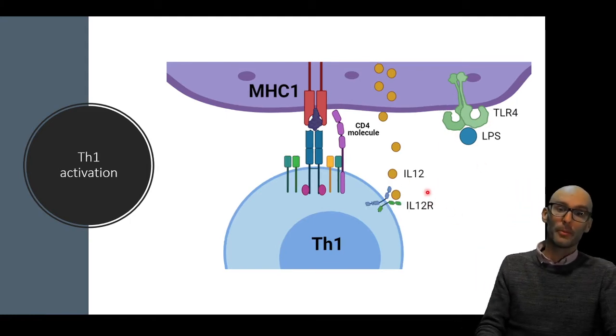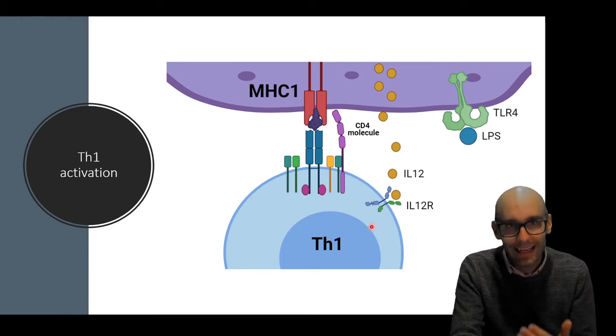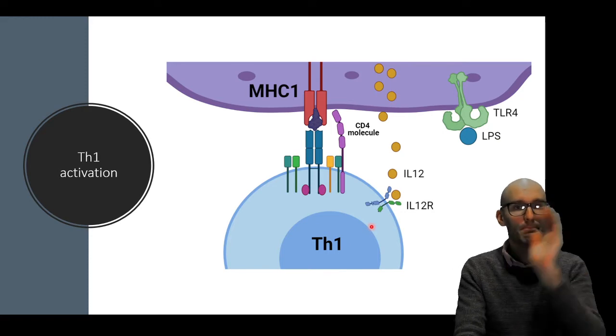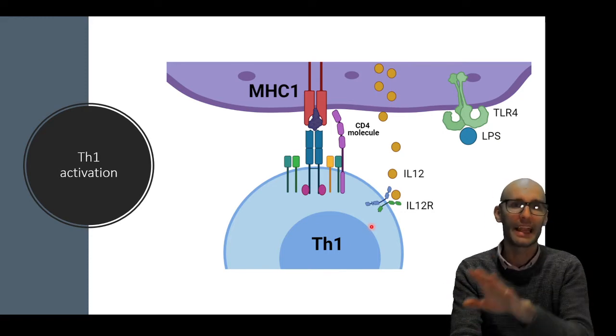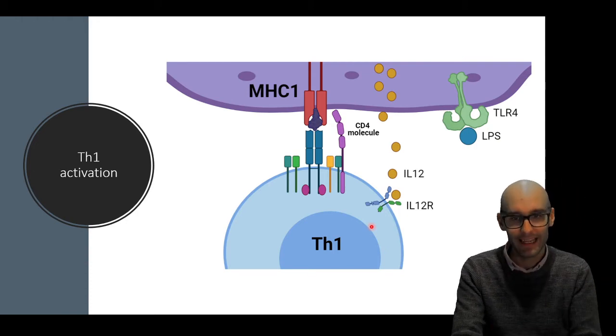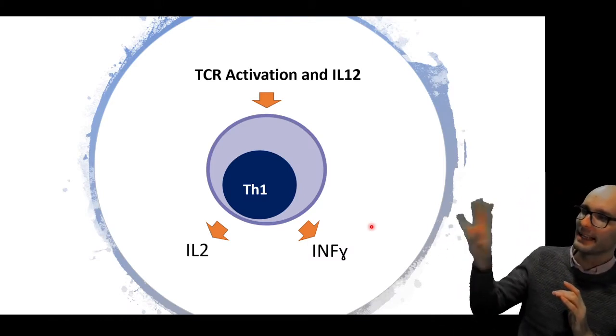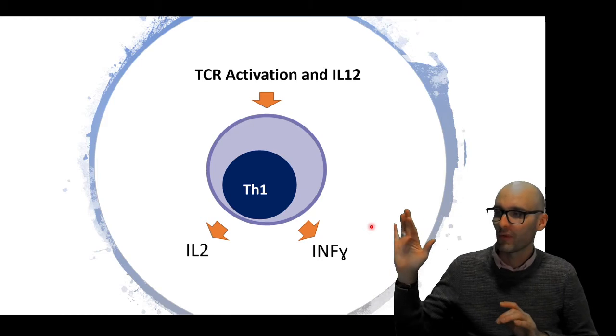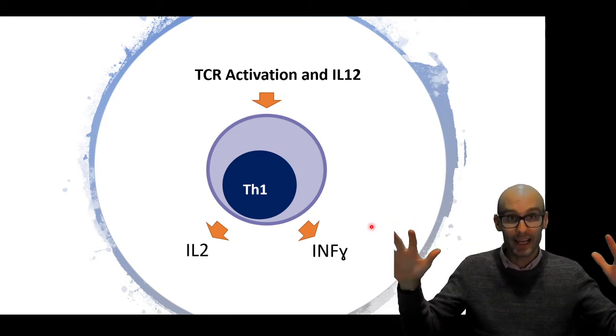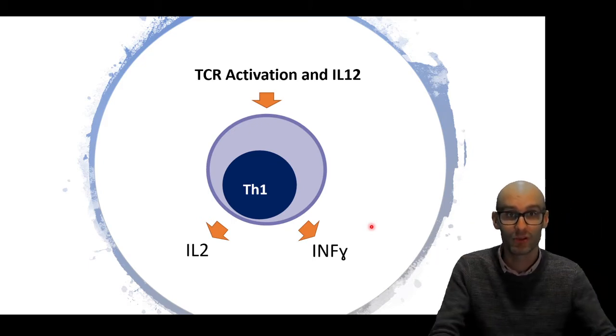Now IL-12 will be detected by the IL-12 receptor on the TH cell. And that will make it into a TH1 cell. So it's both the TCR has been activated and its interleukin-12 receptor has been activated to create a TH1 cell. Now once we get this TCR activation and the IL-12 activation, and we get this TH1 cell, it is now going to coordinate the immune response. It's both going to proliferate and coordinate this immune response.